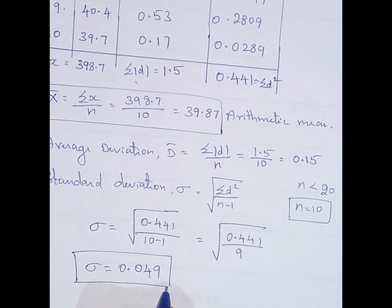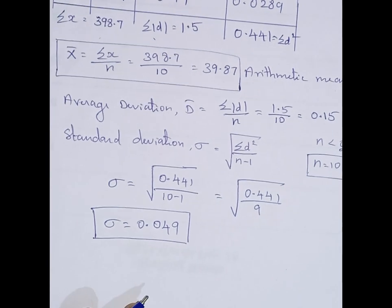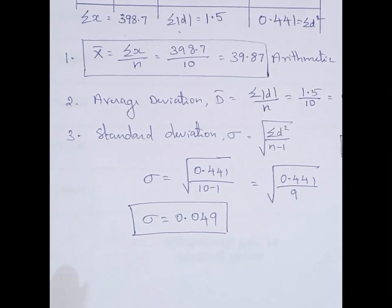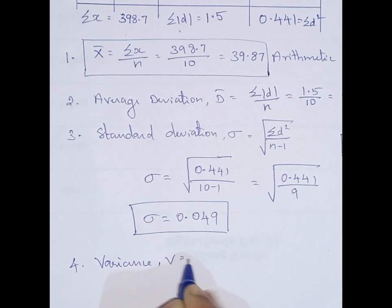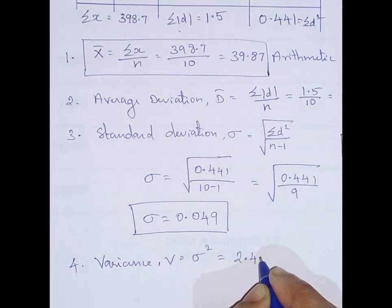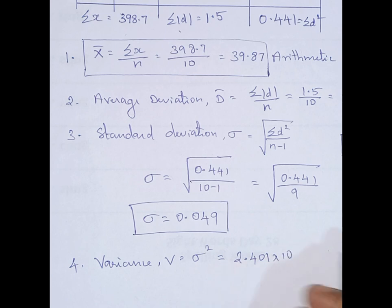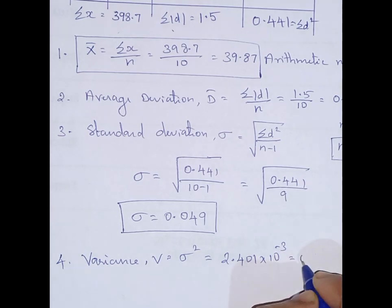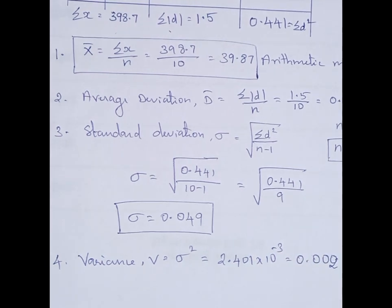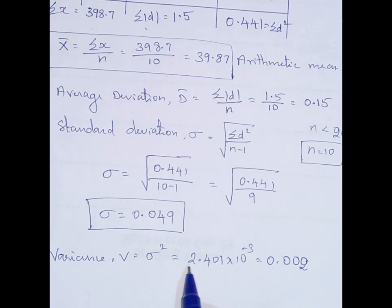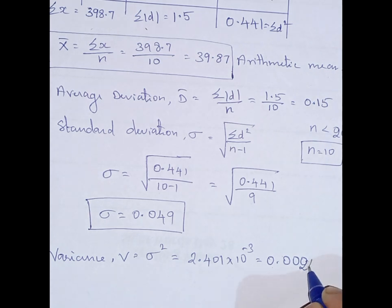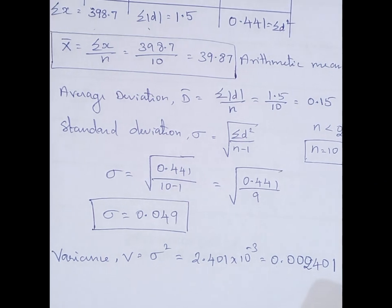This is the standard deviation. Now I find variance. The formula for variance is the square of the standard deviation. Squaring sigma gives 2.401 × 10⁻³, which can be written as 0.002401. This is the variance.